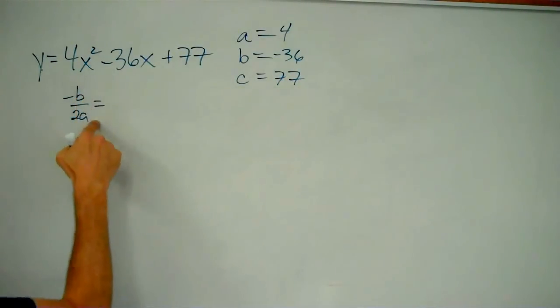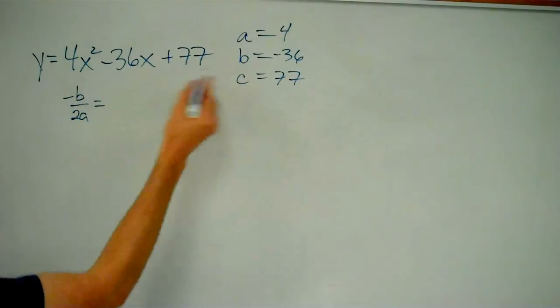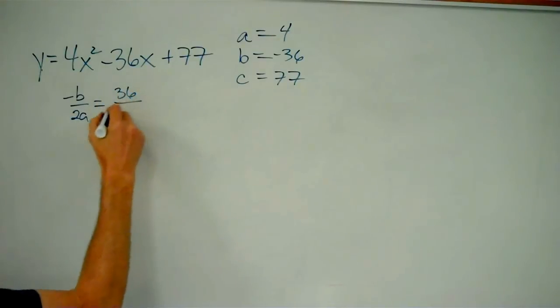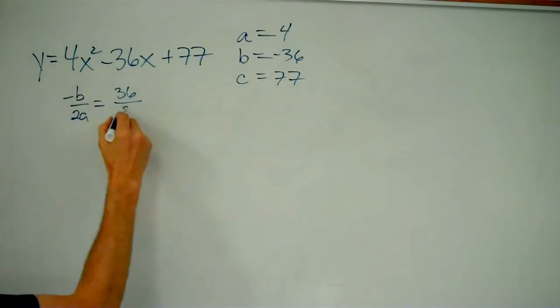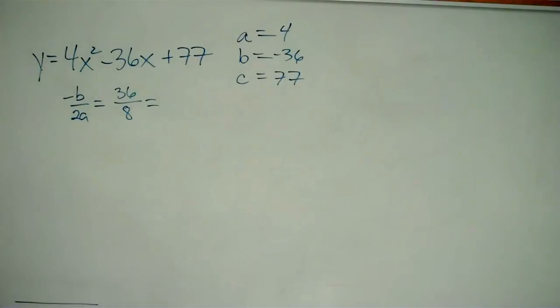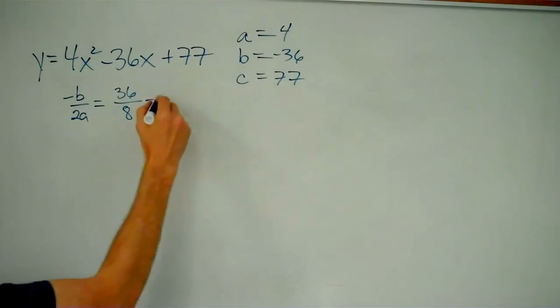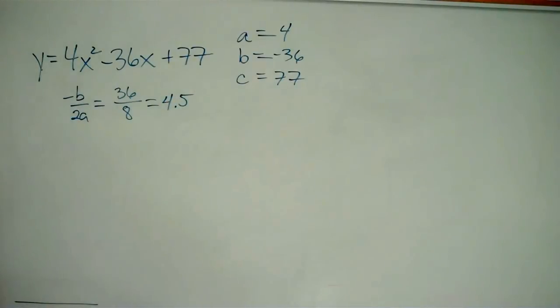So negative b over 2a is going to be negative negative 36, that's just a positive 36, over 2a, that's 2 times 4, that's 8. And 36 over 8 turns out to be 4.5.